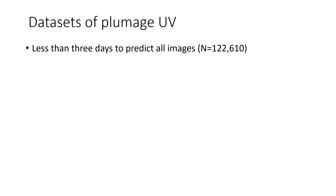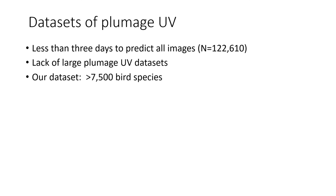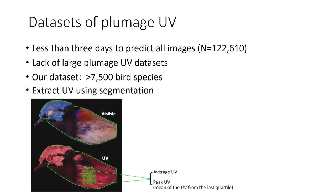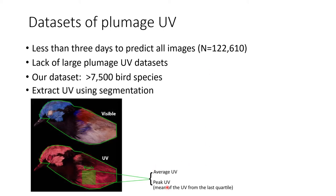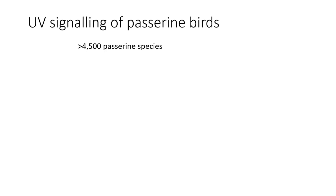UV is perceived by birds and is an important signaling mechanism for them. However, a dataset of bird plumage UV that covers a large range of species hasn't been built yet. We built a world bird UV dataset with the help of deep learning. Two UV metrics — average and peak UV — were calculated using UV values of segmented pixels.